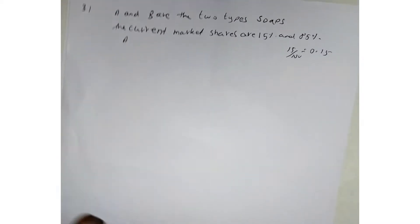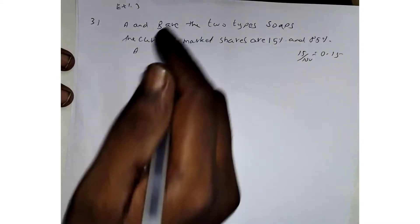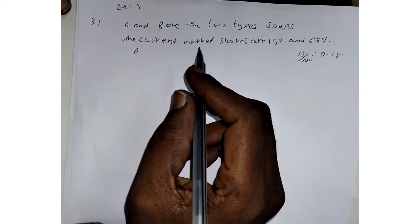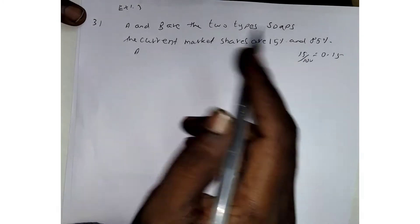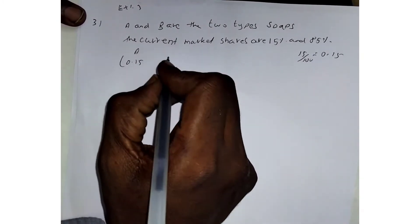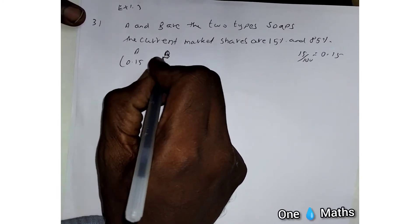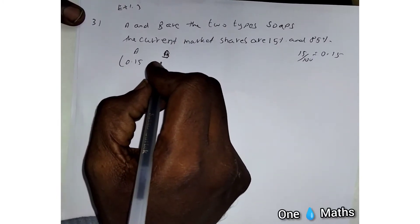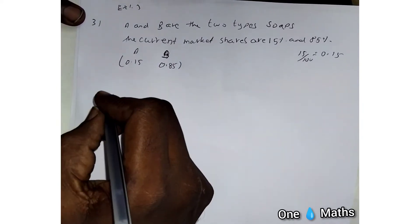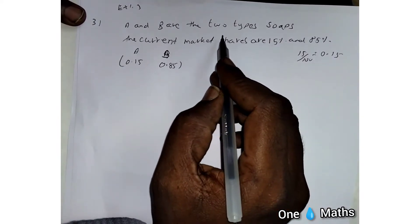In Exercise 1.3, they discuss the sales of two soaps A and B. The current market share of soap A is 50 percentage, written as 0.15, and the market share of soap B is 85 percentage, written as 0.85. A person buys one of the soaps and on the next purchase may either buy the same soap or switch.